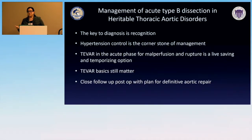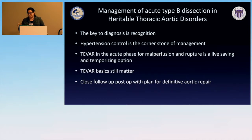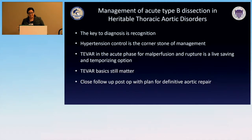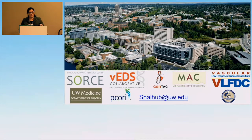The key to diagnosis is recognition — all those red flags need to come into play. It's not just 'they have a dissection, put them on antihypertensives and send them home.' Hypertension control is a cornerstone no matter what, with or without a stent graft. TEVAR is a great tool in the acute phase even for genetically triggered aortopathies, but technique matters. Close follow-up and a discussion about long-term repair are essential.